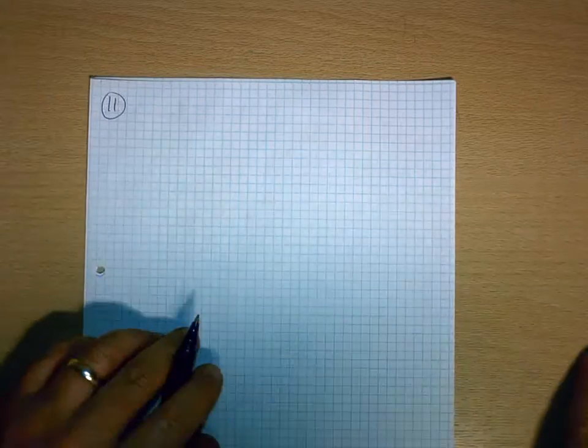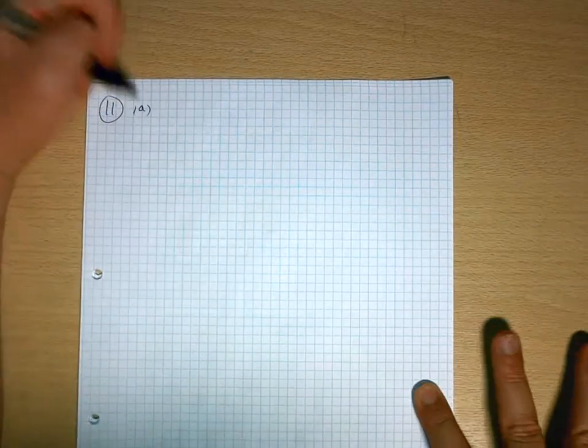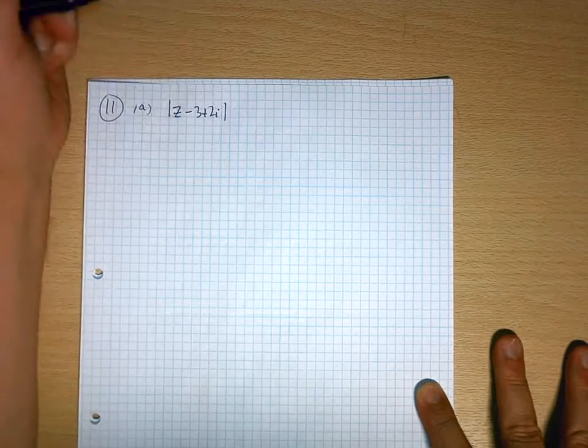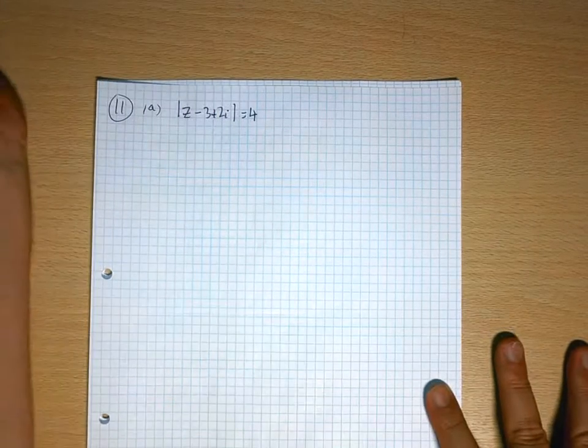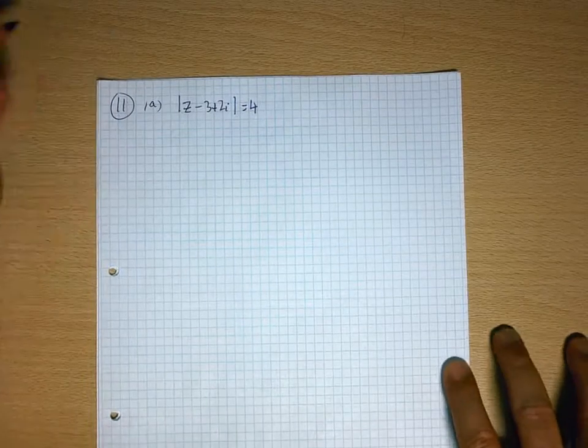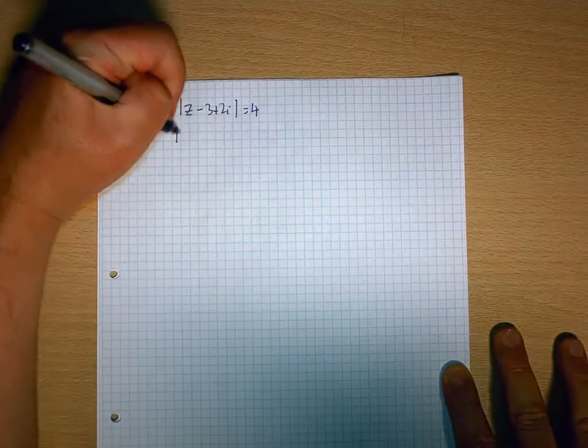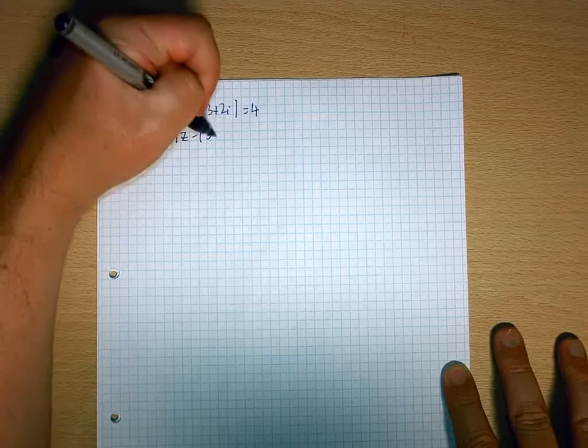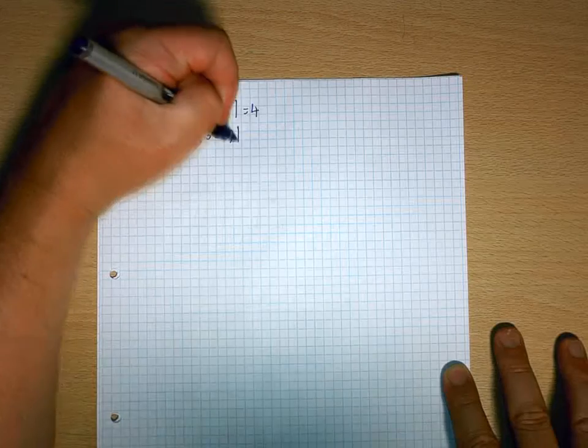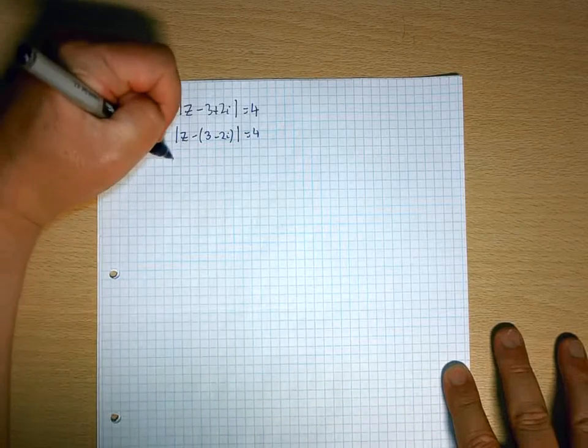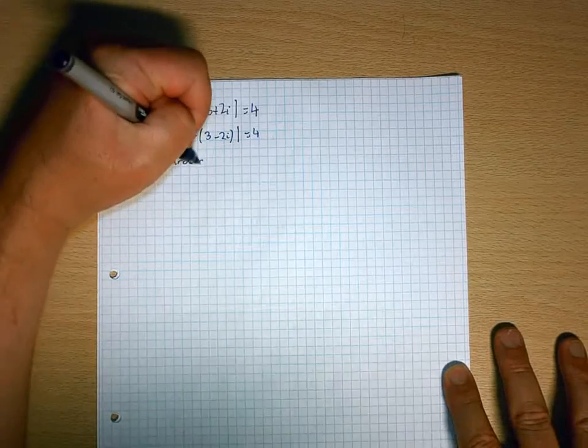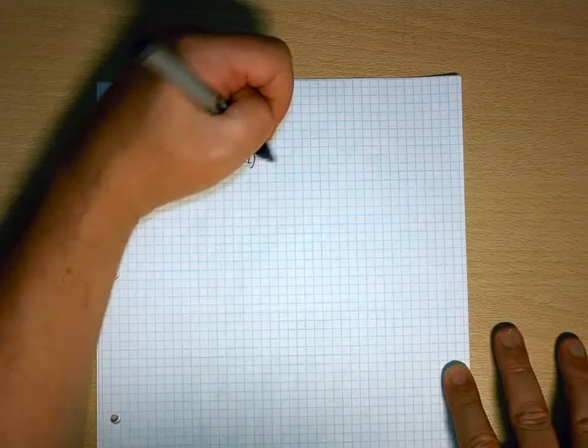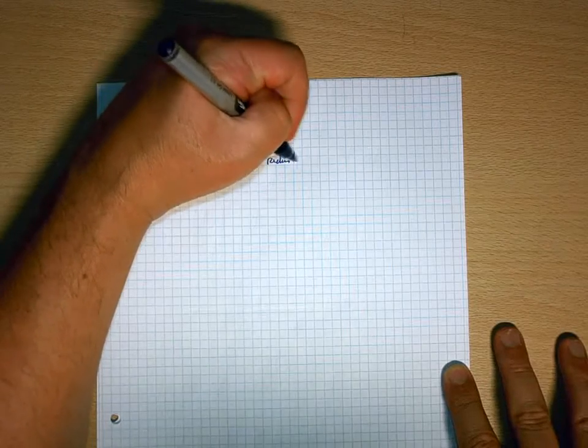Question 11, A. First of all, we have the modulus of z take 3, add 2i equals 4. Take out the negative, so we've got a circle, centre 3, minus 2, radius 4.